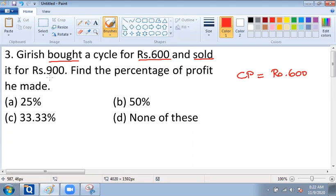It is given that Girish sold it for Rs. 900. So the selling price of this cycle is equal to Rs. 900.